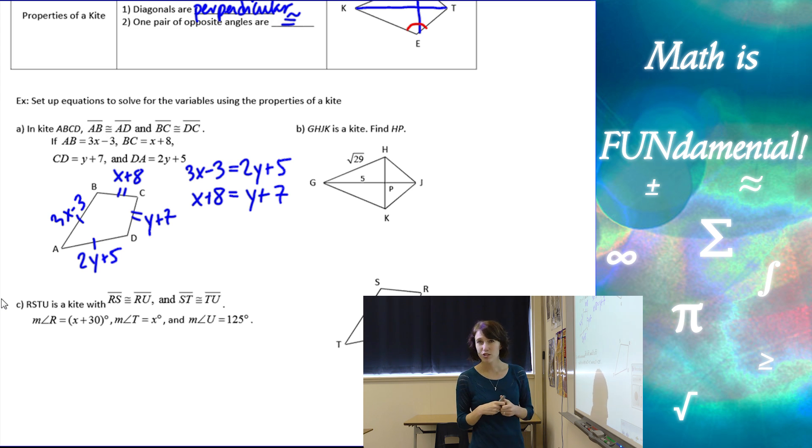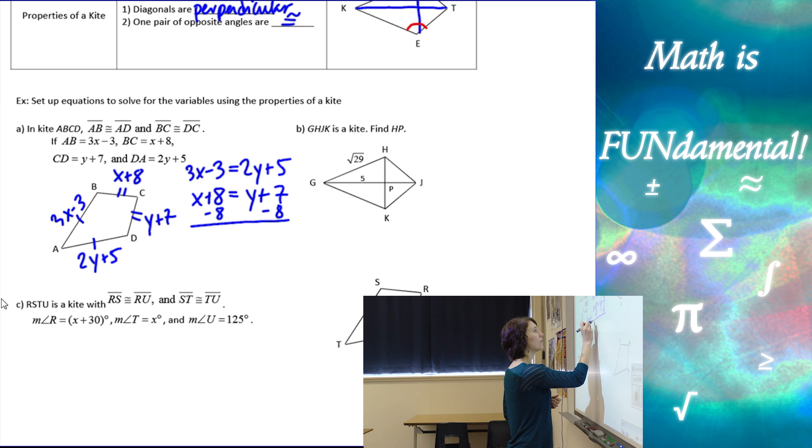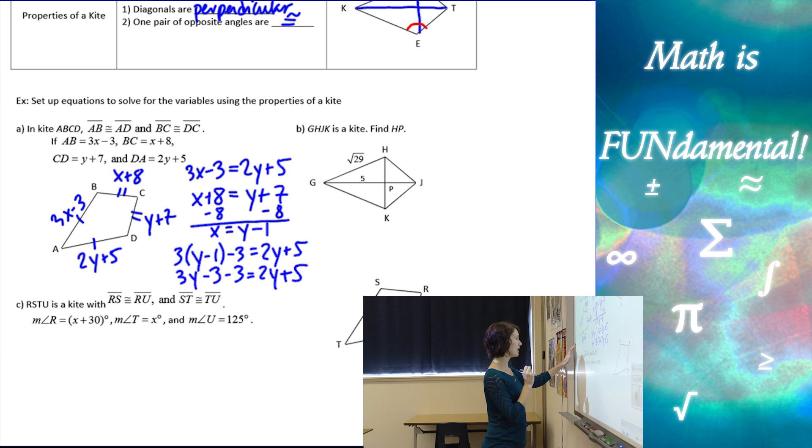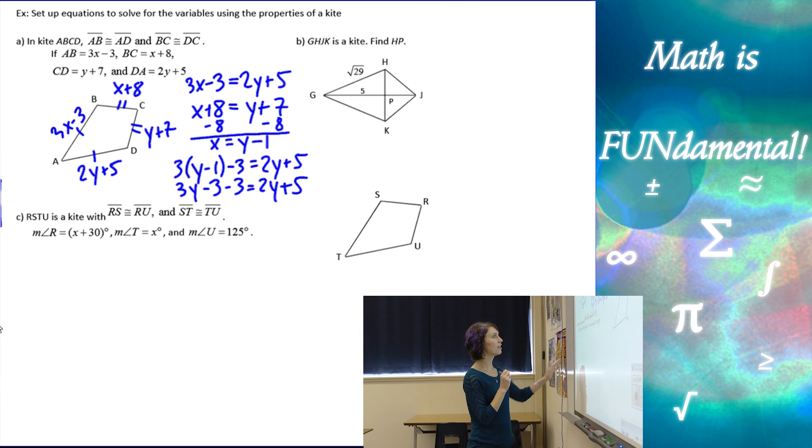In this case, I think maybe substitution would be easier. If I get x by itself, x equals y minus 1, I can take that x value and plug it in to the first equation. 3 times y minus 1 minus 3 equals 2y plus 5, and then I distribute.